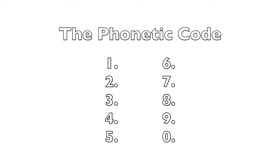The first step to building your amazing memory is to learn how to easily memorize numbers by learning the phonetic code. The phonetic code is easy to learn yet very powerful, and it is the foundation upon which your memory training will rest. It consists of only 10 units corresponding to the 10 digits of our number system — 1, 2, 3, 4, 5, 6, 7, 8, 9, and 0 — and it just so happens there are only 10 basic consonant sounds in the English language.